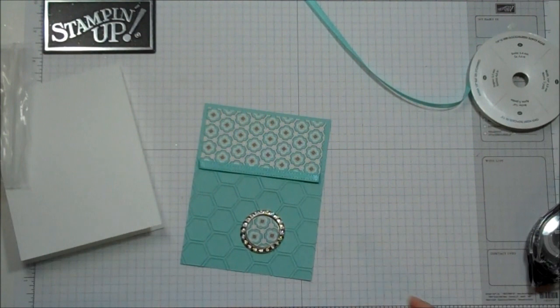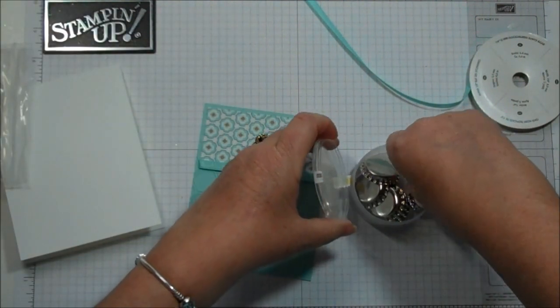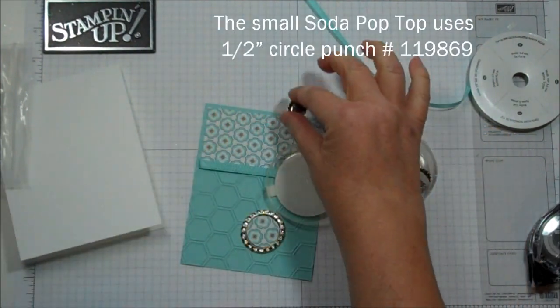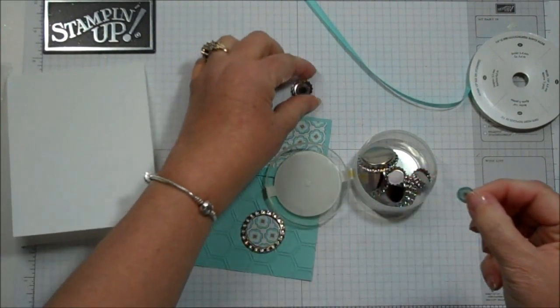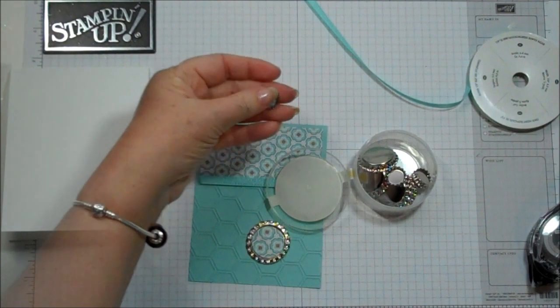You can use a dimensional too. And then for the smaller Pop-Top, let me show you that. The smaller one, right here. We use the 1-inch circle punch. I already punched one of those out. I'll show you that it fits right in there. The 1-inch circle punch fits right inside of that.